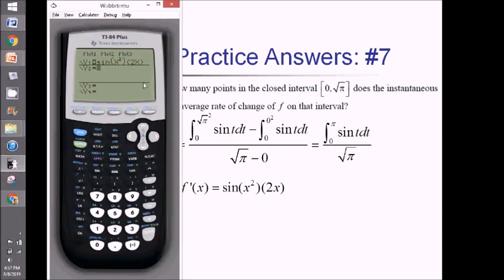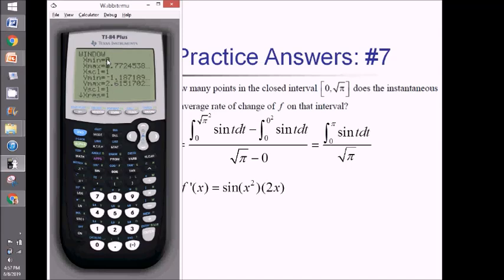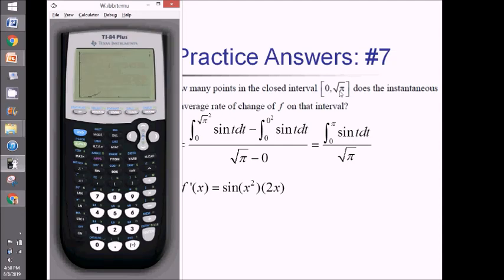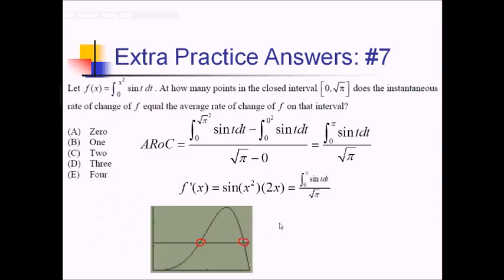On my calculator, I've entered IROC as y1. For y2, I enter alpha A — the stored AROC value — because using a stored number is much faster than having the calculator recompute the integral over and over. Setting the window from 0 to √π and pressing zoom, the graph shows these two things intersecting in two spots. The good news: you don't need to calculate what the intersections were — just count them. There are two. Choice C.